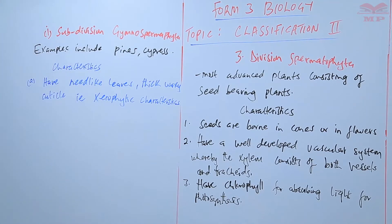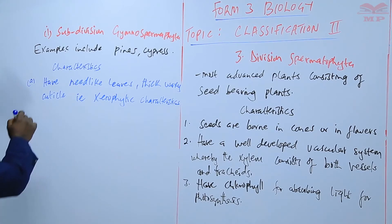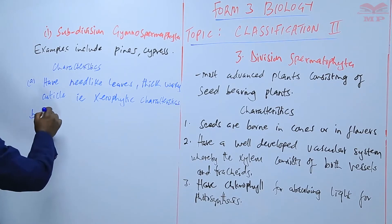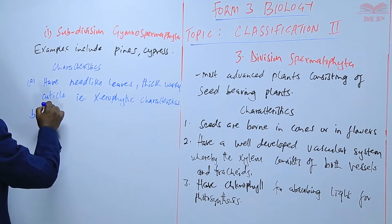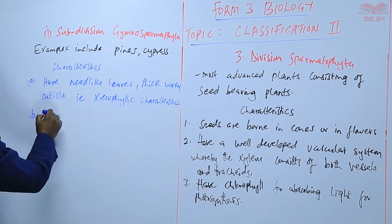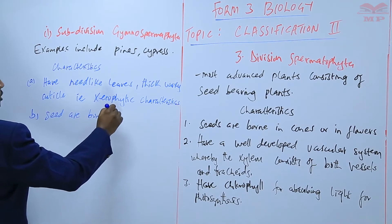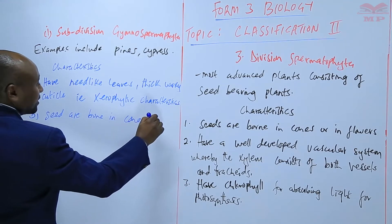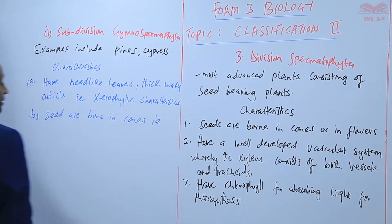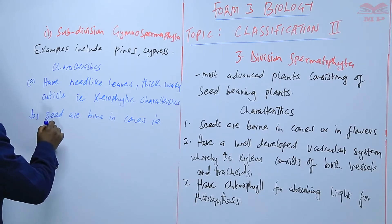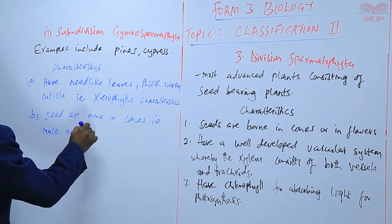Their seeds are born in cones — specifically male and female cones. Mature seeds are born in female cones, while male cones produce pollen.